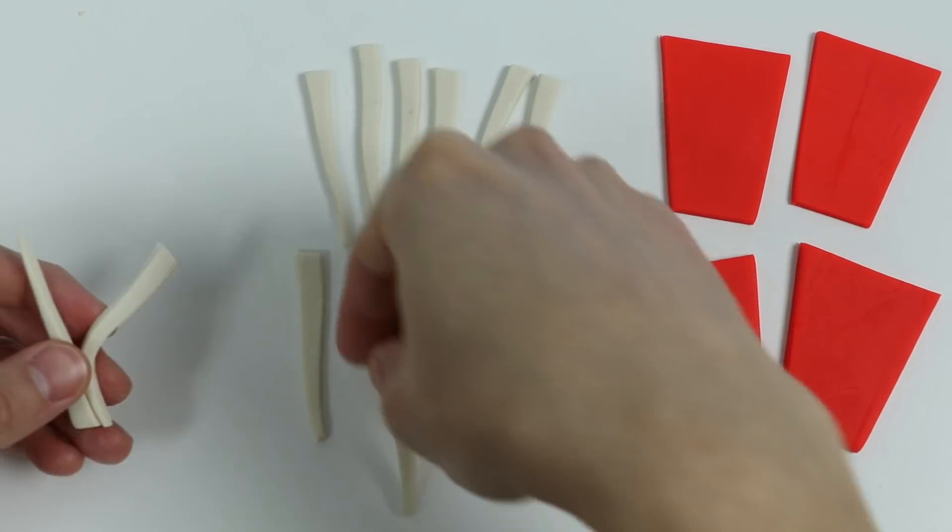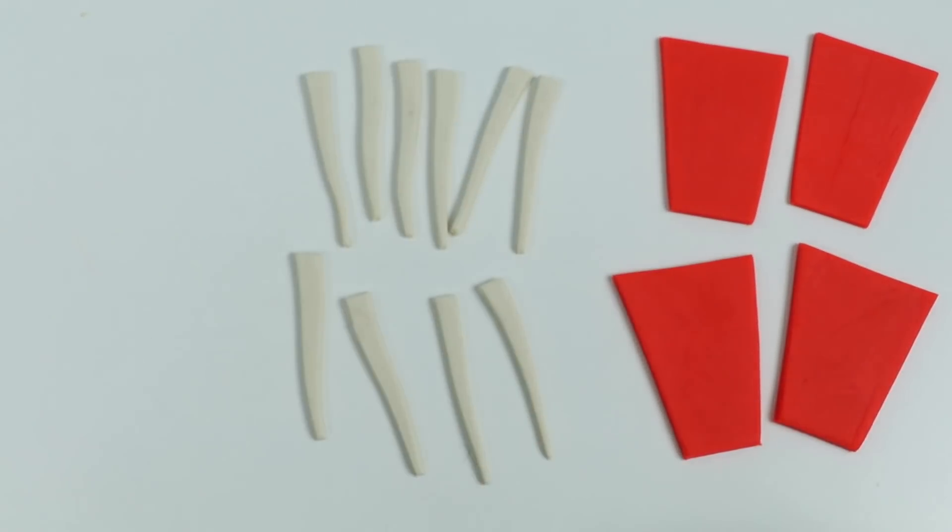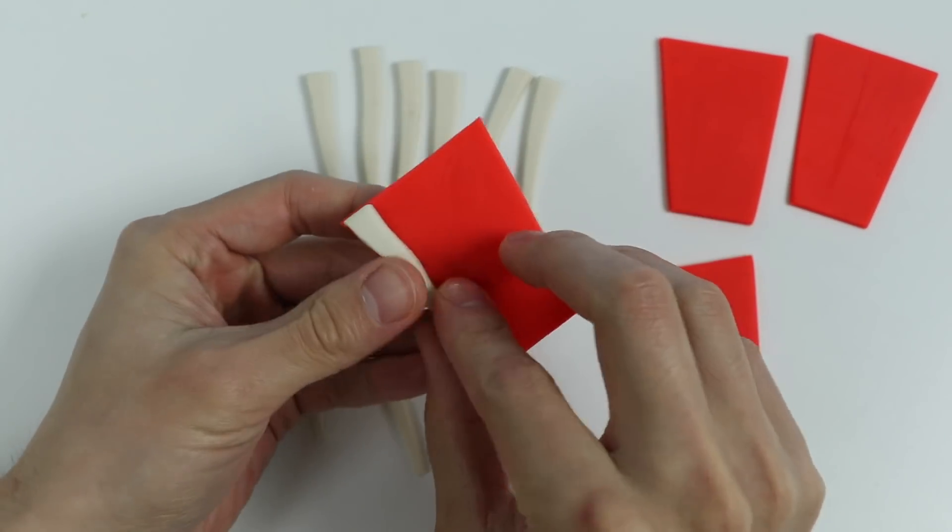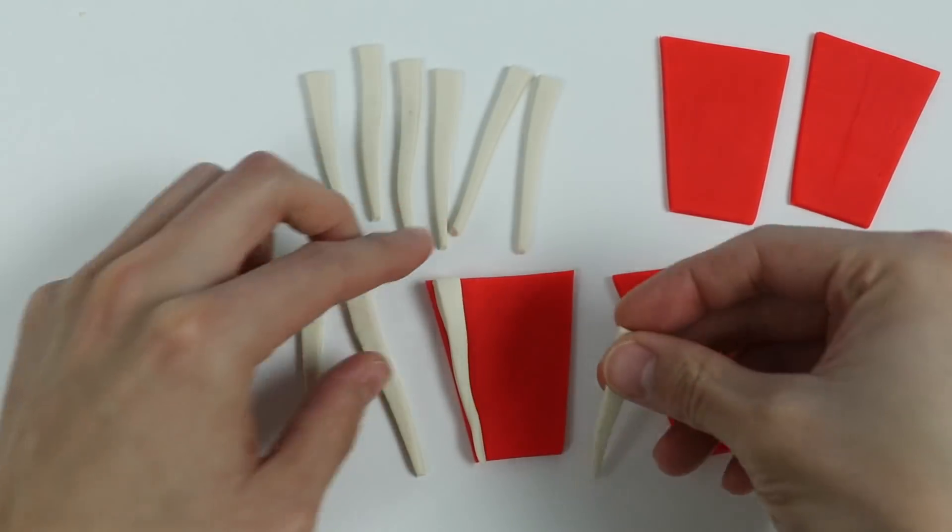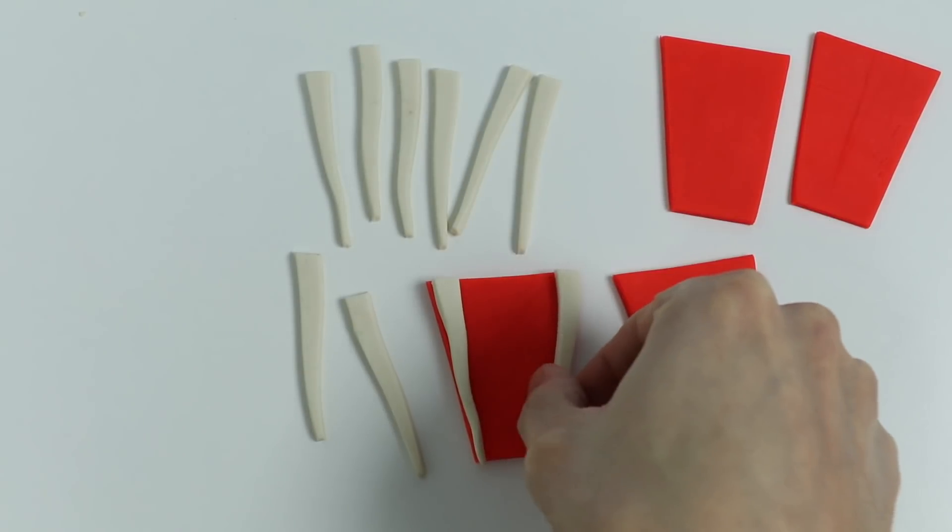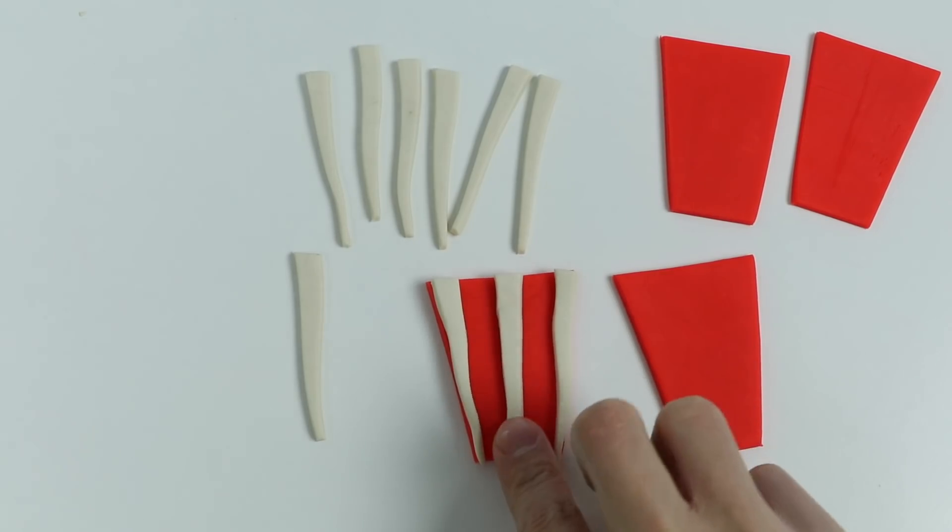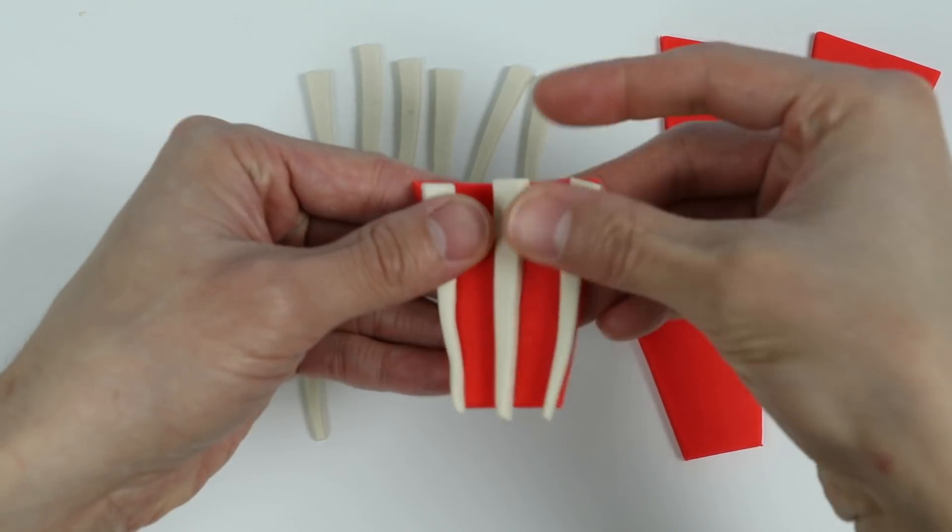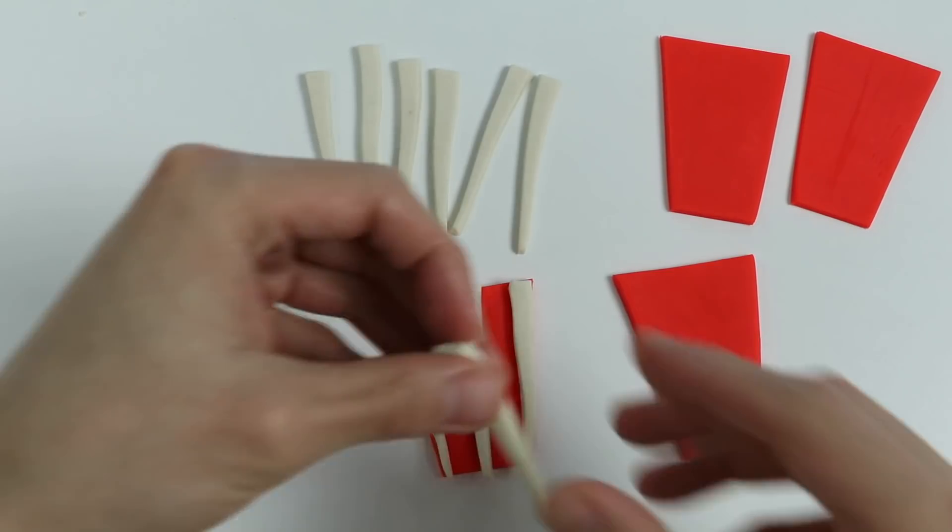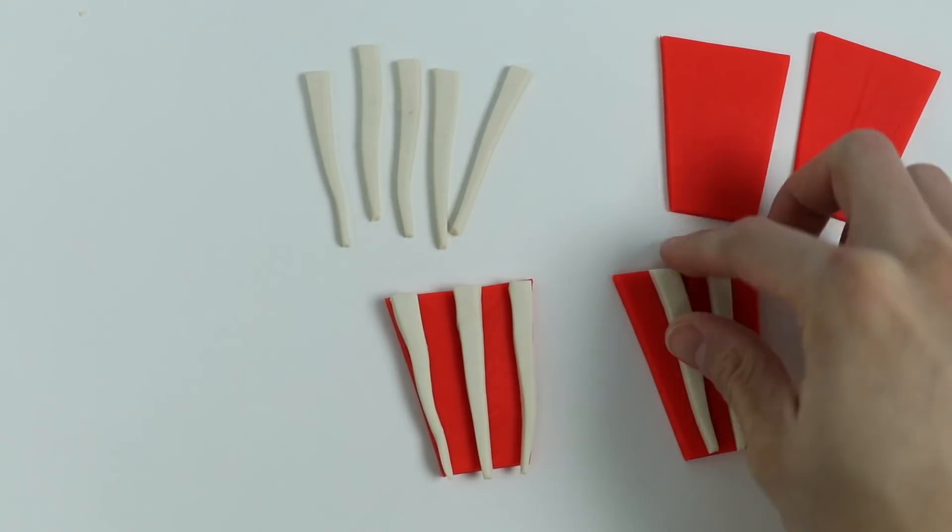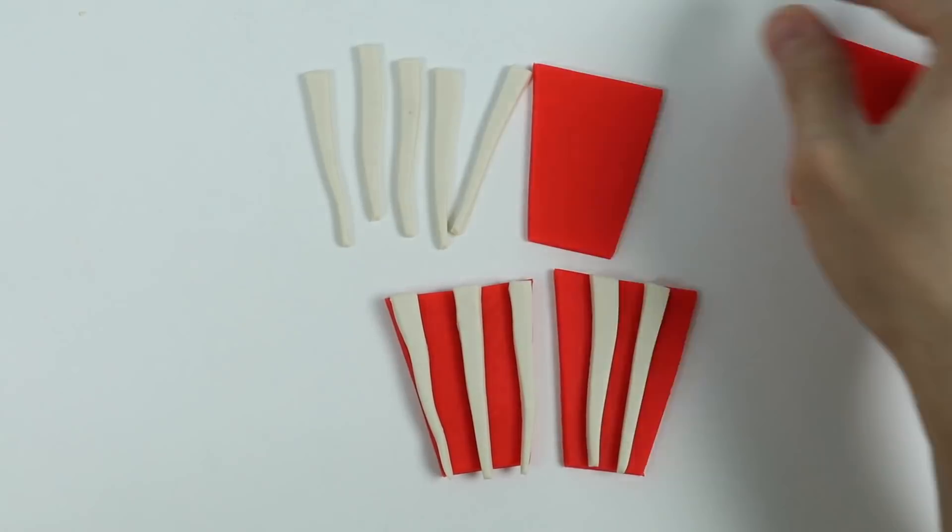Now let's attach these stripes onto the bucket shapes. We'll attach three stripes onto this one. Perfect! Here's a closer look. Now let's attach two stripes onto this one. Now let's do the same for the other two.